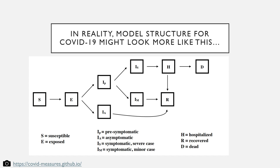This is some great work done out of Aaron Mordecai's Stanford lab — I've included a link to their GitHub site. Here we have the number of susceptible individuals moving into an exposed or incubation class. Exposed individuals can either be asymptomatic and progress directly to recovery, or they can be pre-symptomatic and move either into a severe or more minor type of infection. The severe infection, of course, can lead to hospitalization and death.